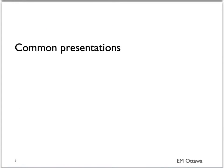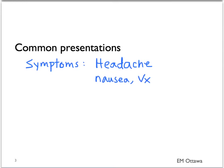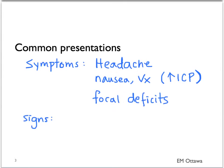In terms of the common presentations, the patient will be complaining of headaches, nausea and vomiting, particularly if there is increased intracranial pressure. They might also be complaining of focal neurological deficits. The physical signs are dependent upon which area is being affected by the bleeding.